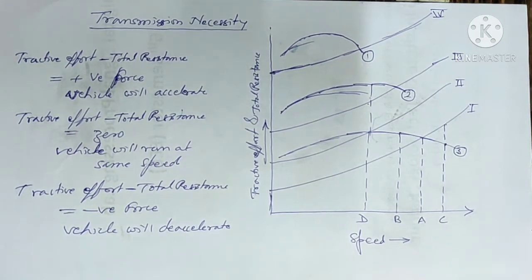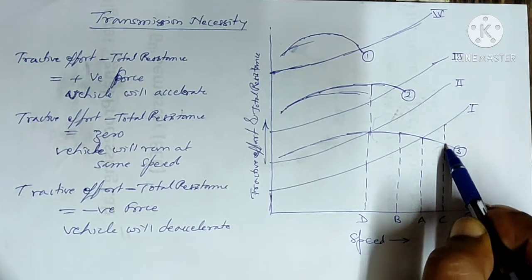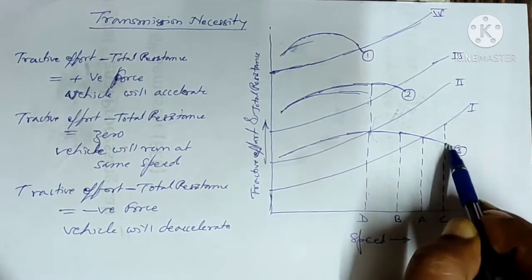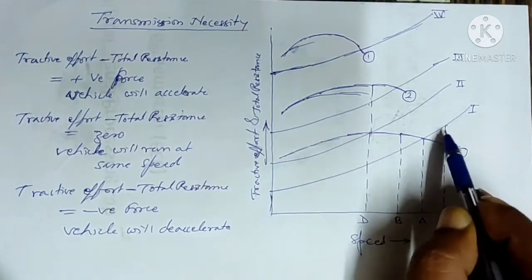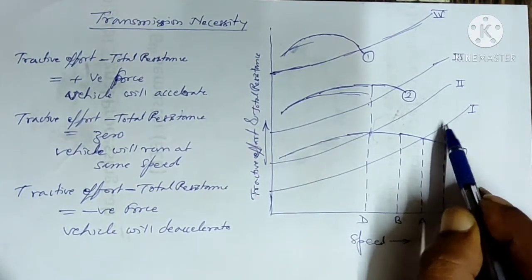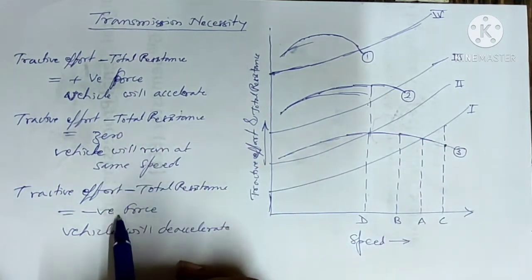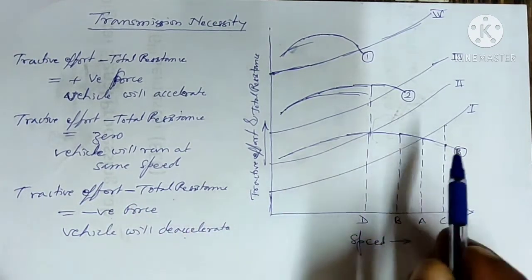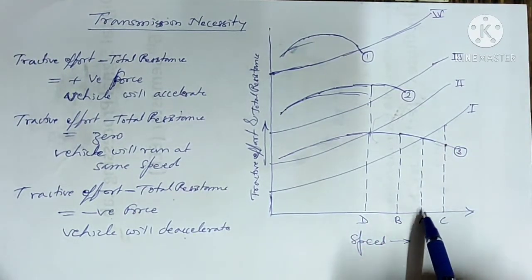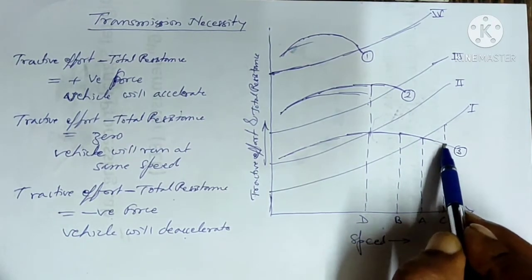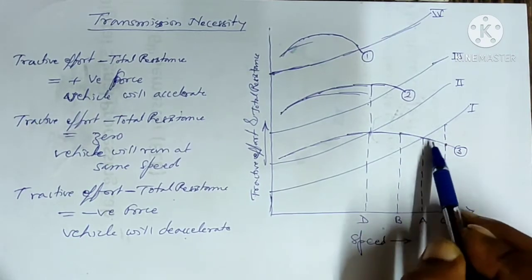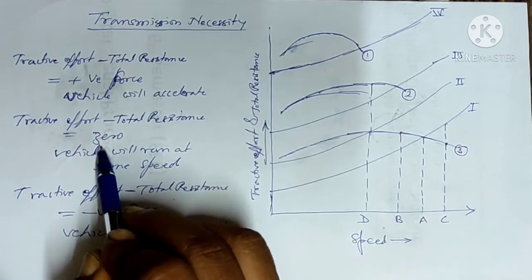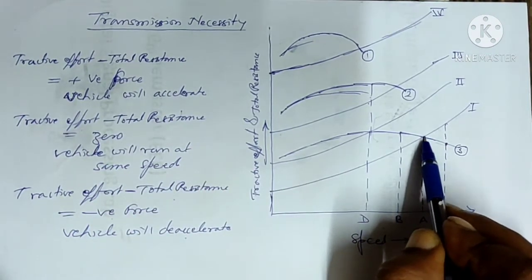Now let us look at the curve. Say our vehicle is running at point 0.3, moving with a speed of C. At this particular point, the tractive effort is less and the resistance is more, so the net force is negative and the vehicle will decelerate. The vehicle speed will reduce from C to A, reaching the point where tractive effort and resistance become equal — that is, tractive effort minus total resistance equals zero — and the vehicle will continuously move at that speed.